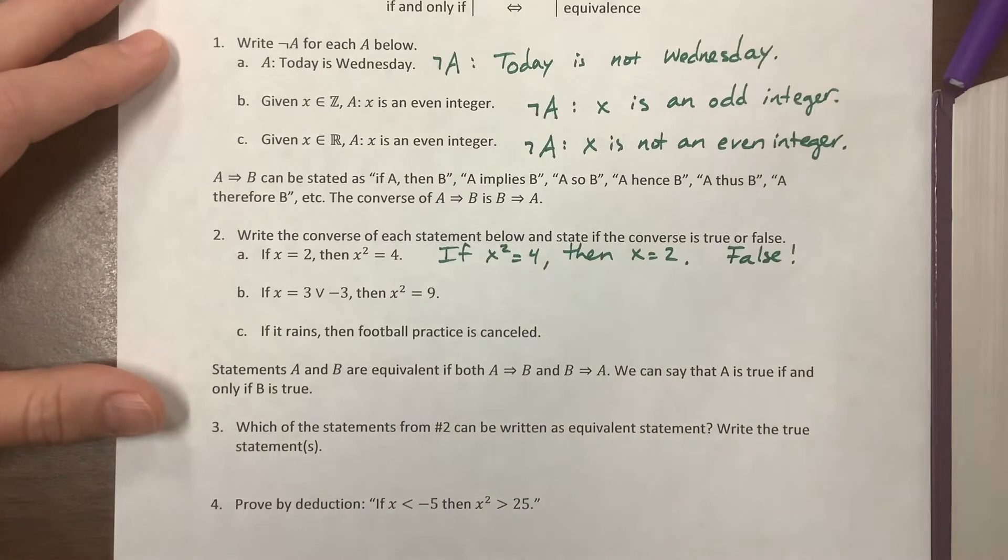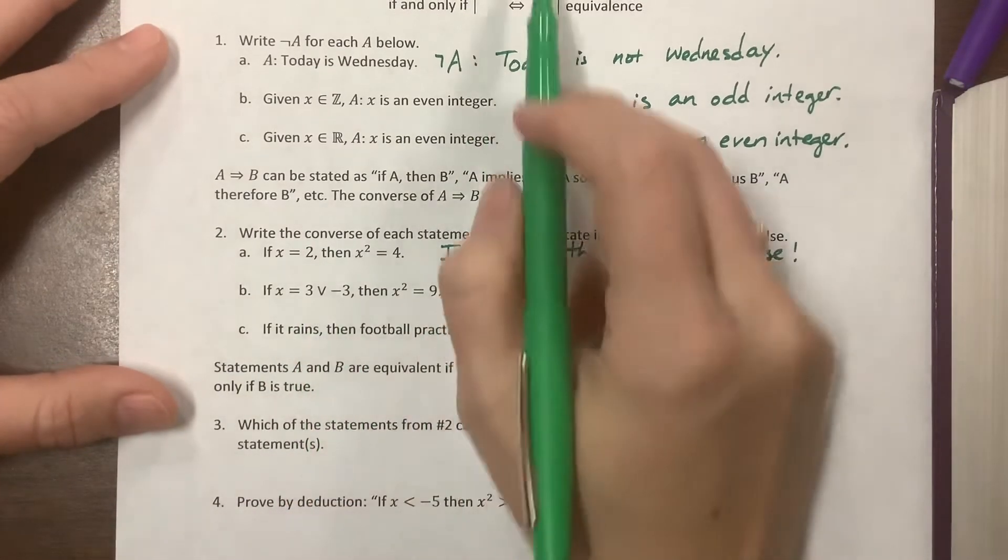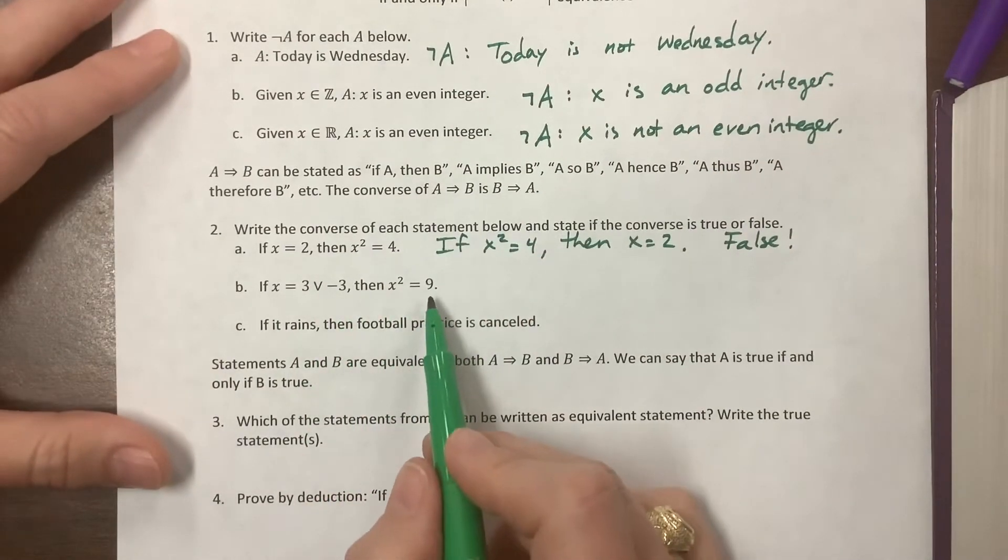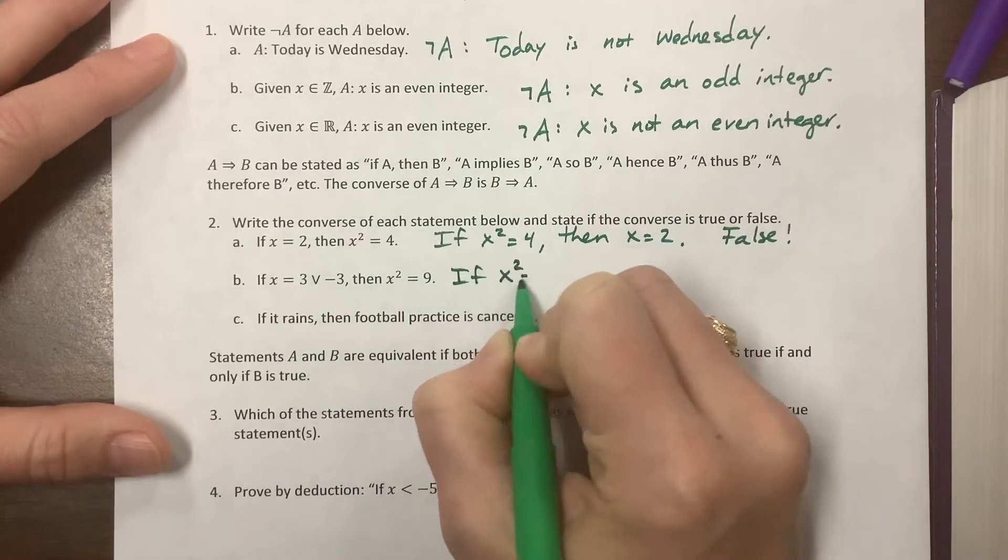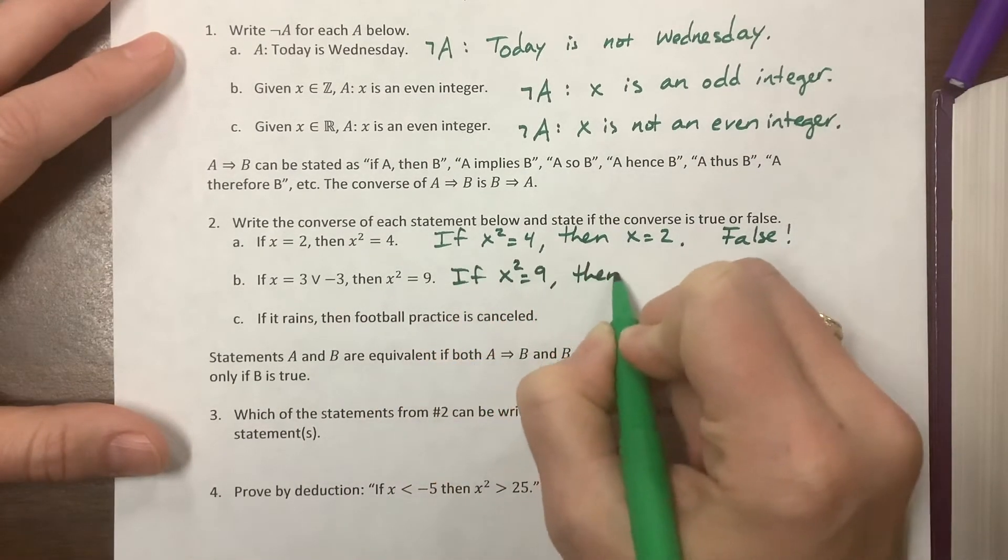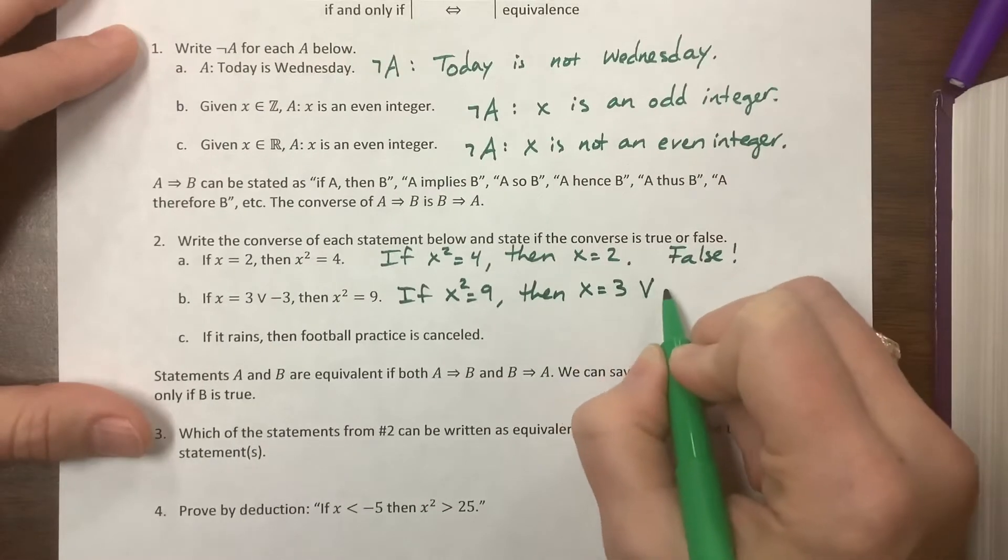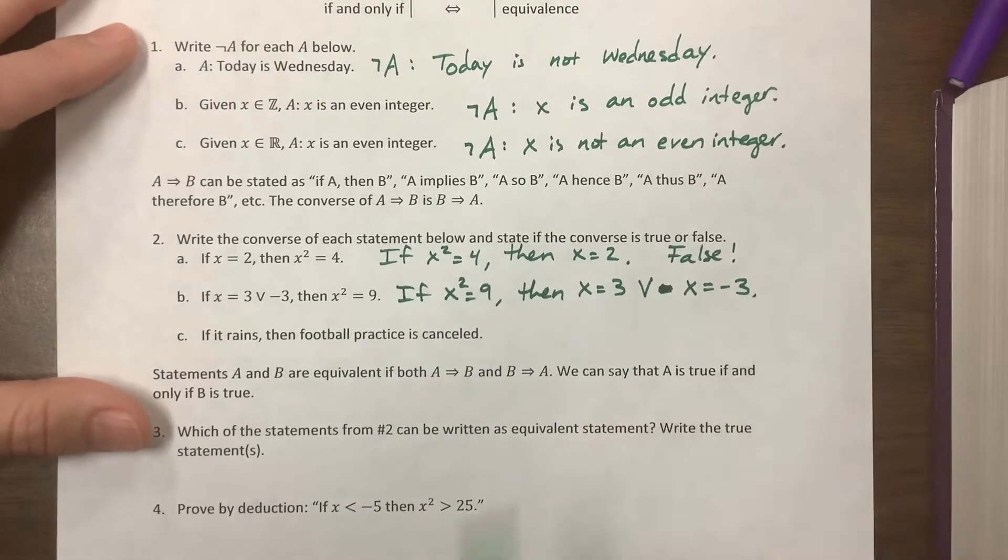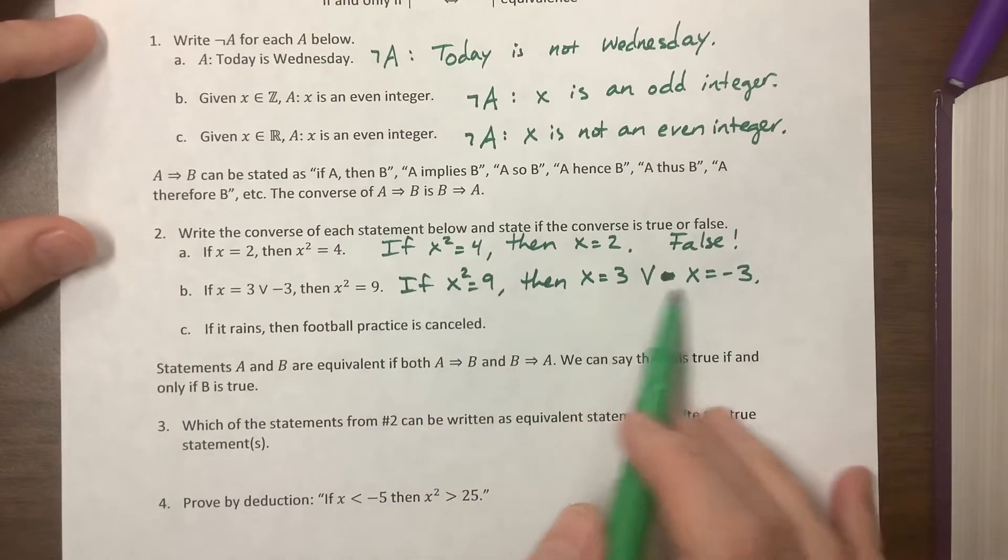Now this one says: if x = 3 or x = -3, then x² = 9. The converse is: if x² = 9, then x = 3 or x = -3. Sorry, typo. This would be true. If x² = 9, then it's either going to be positive or negative 3.